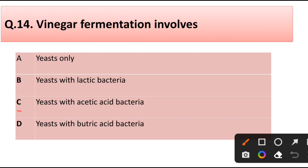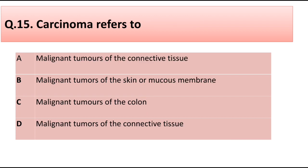Question number 40. Vinegar fermentation involves: yeast only, yeast with lactic bacteria, yeast with acetic acid bacteria, or yeast with butyric acid bacteria. Correct answer is option C, yeast with acetic acid bacteria.